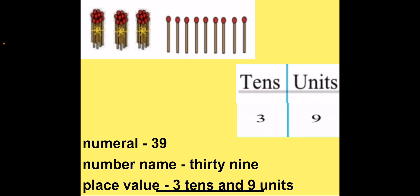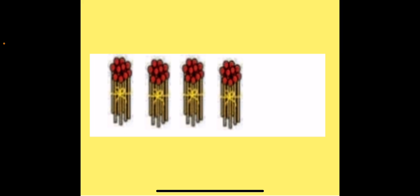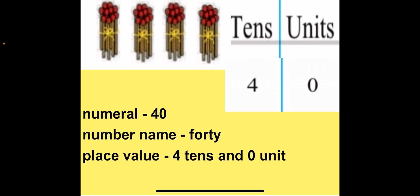Now children we have number 39. When we add 1 more unit to this we will have a bundle of 10, so we have 4 bundles of 10. This gives our next number, that is 40, where we have 4 bundles of 10, that is 4 tenths and 0 units. After 39 we get number 40. The number name for 40 is FORTY. The place value for 40 is 4 tenths and 0 units. I hope you all have understood numbers 31 to 40.